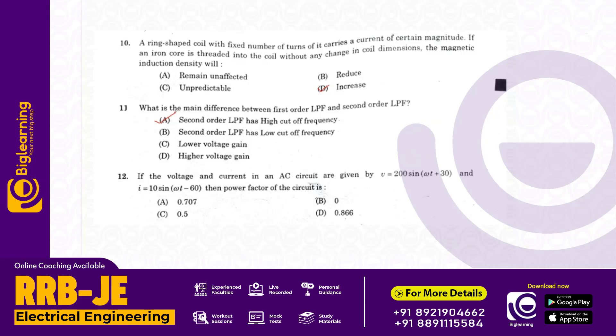The voltage and current in an AC circuit are given by V equals 200 sine omega t plus 30 and I equals 10 sine omega t minus 60. The power factor of the circuit will be zero since the total angle is 90 degrees.